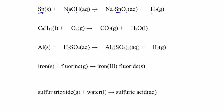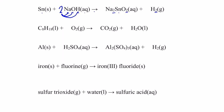We have one sodium here but two over there, so let's put a two in front of sodium hydroxide to balance that. On both sides we have two oxygens, and we now have two hydrogens on the product side. Simply putting a two as a coefficient in front of sodium hydroxide does it: one tin, one tin, two sodiums, two sodiums, two oxygens, two oxygens, two hydrogens — balanced.